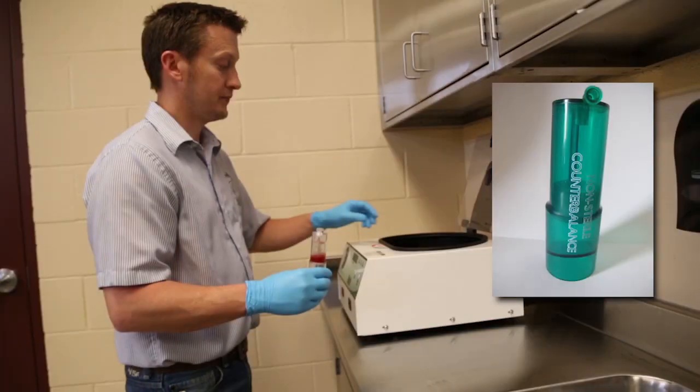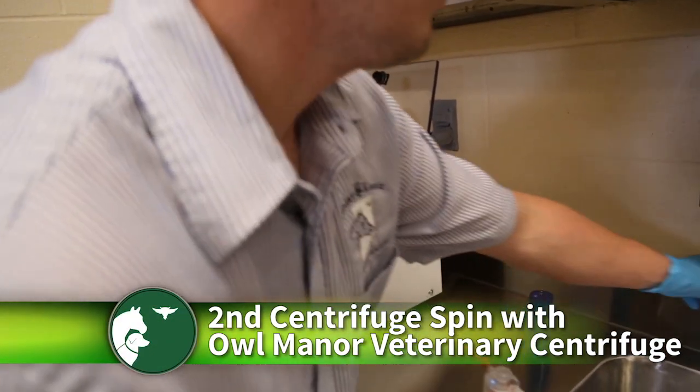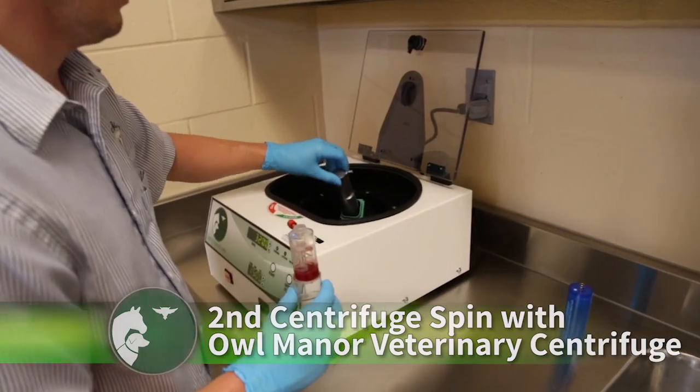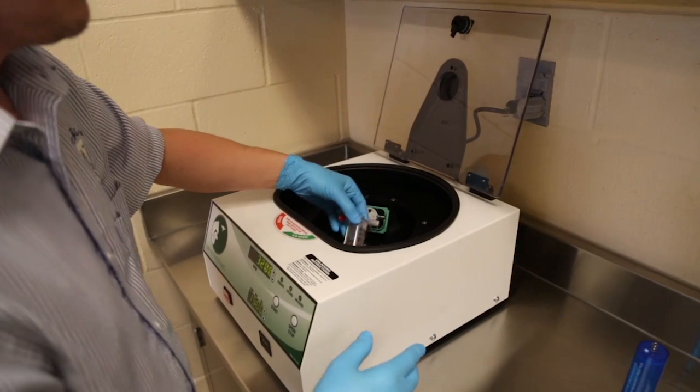Load the concentrator device in the centrifuge, ensuring appropriate balance. The ProStride counterbalance is weighted to appropriately balance the concentrator device. You will need to remove the counterbalance used in the first spin. Again, make sure to load the device with the ports placed horizontal, facing left and right, and not vertical.